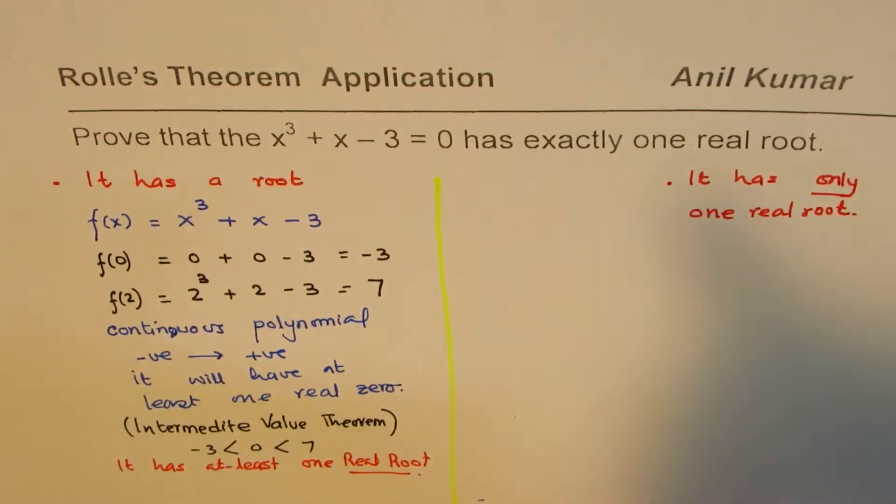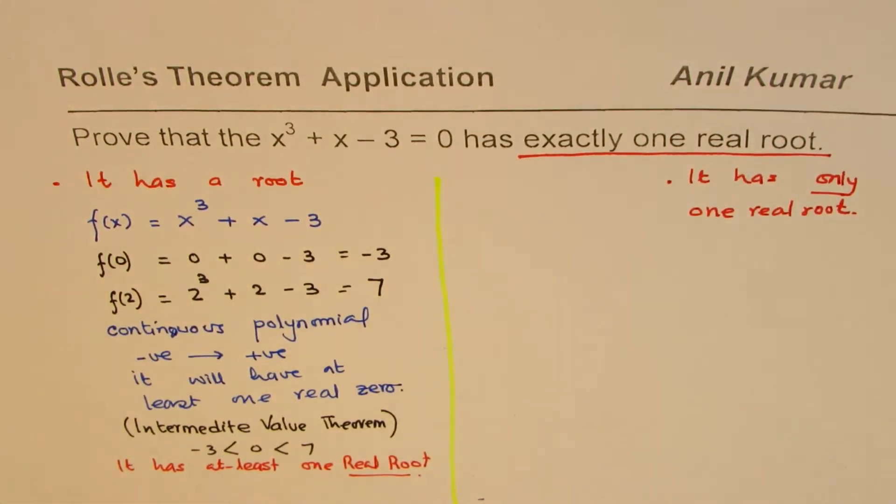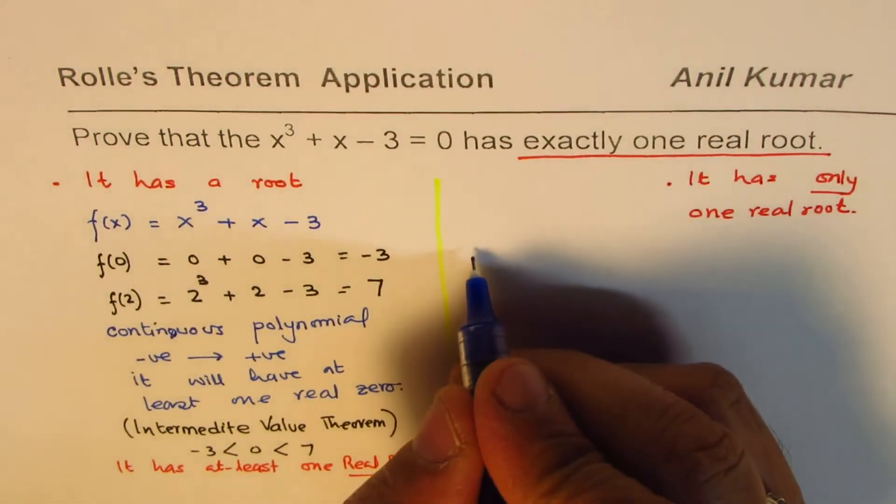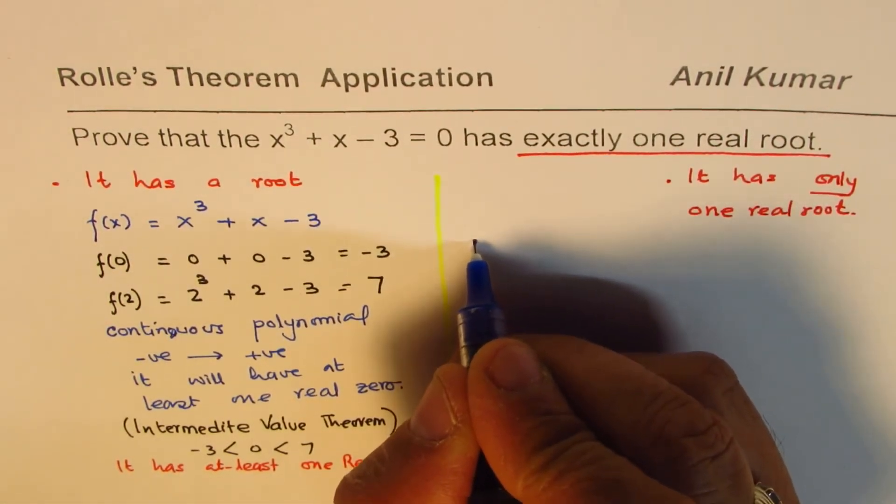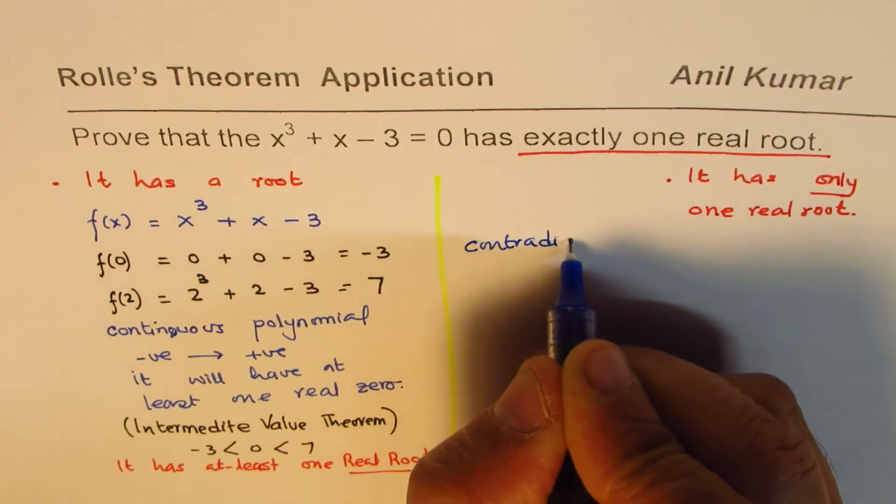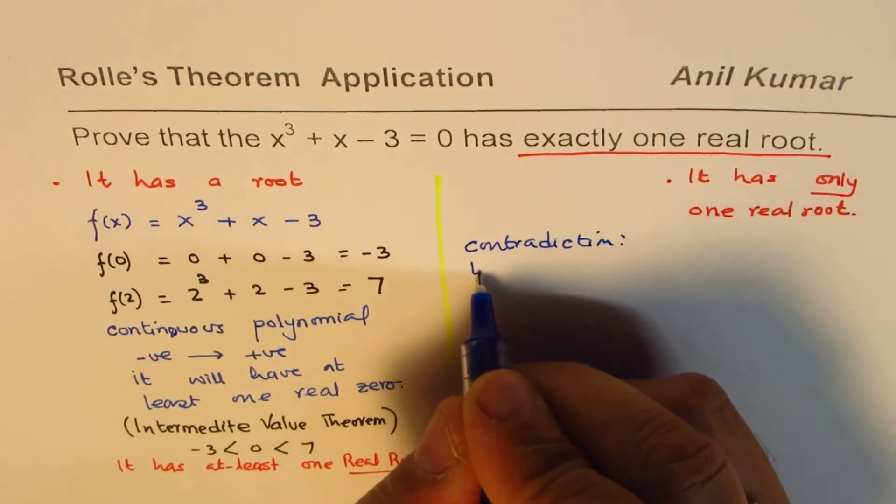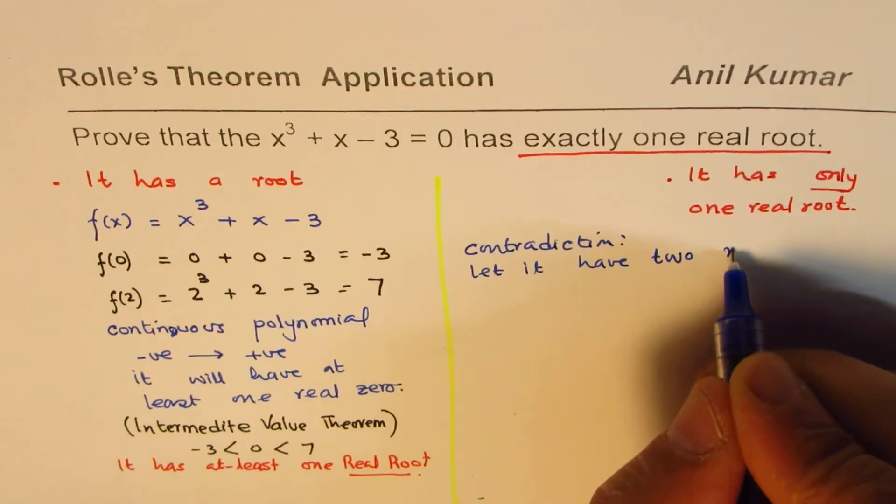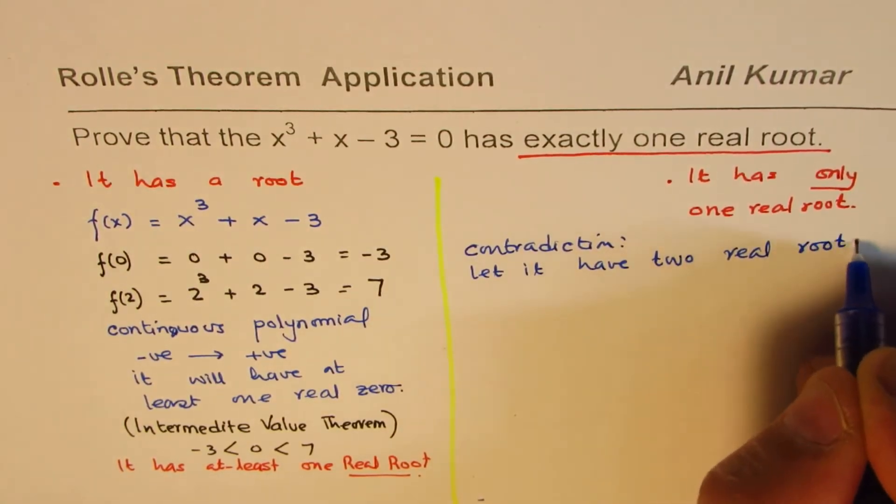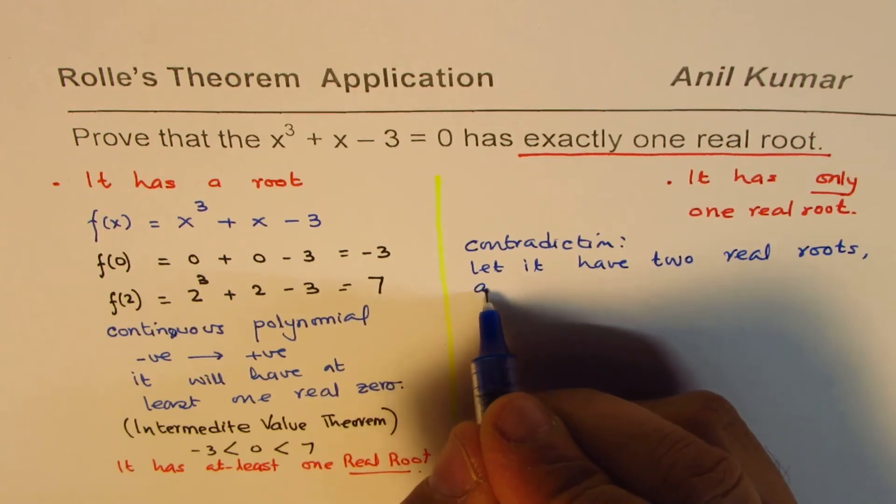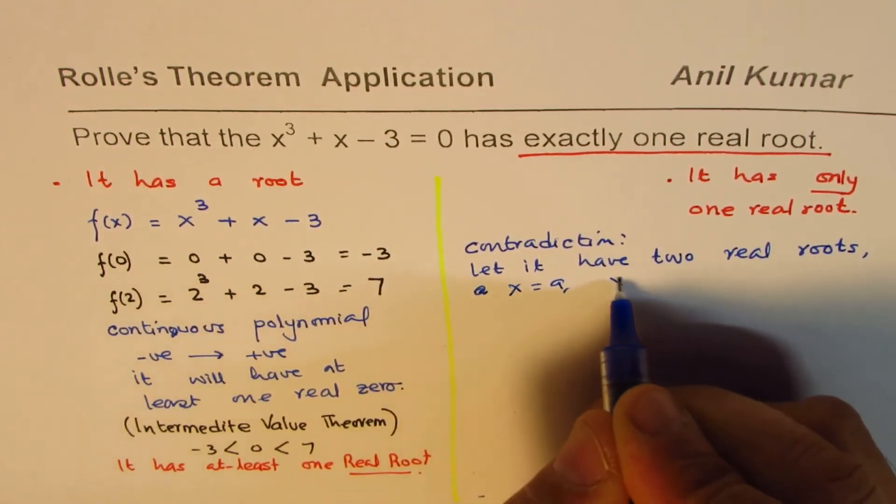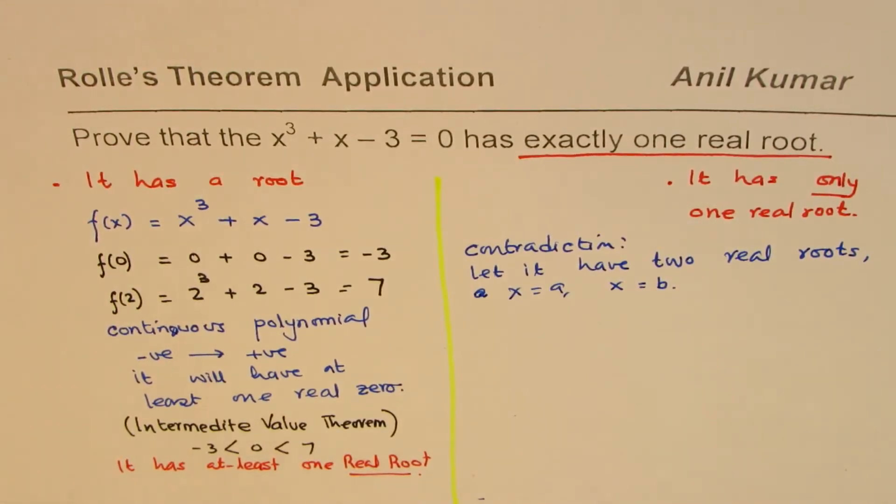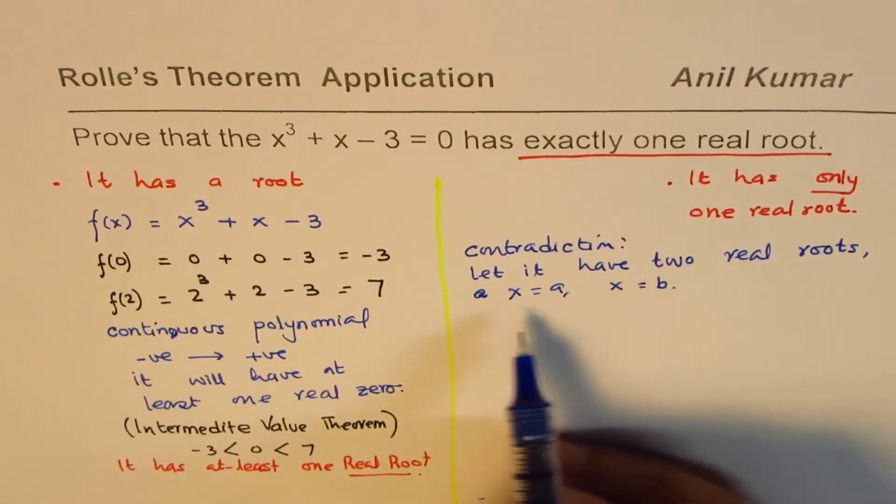Now let's get back to the second part. We want to know that it is exactly one real root. So to prove that it has exactly one real root, we'll start with contradiction. So we'll start with contradiction and we'll say let it have two real roots. And let these roots be at x equals a and at x equals b.